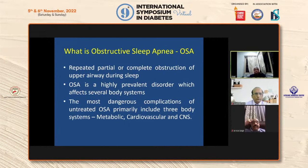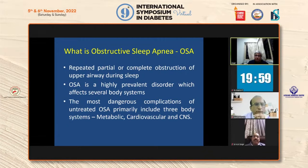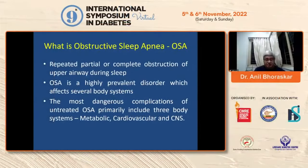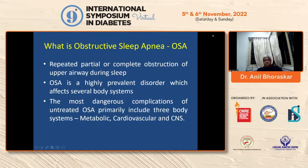What is obstructive sleep apnea? It is repeated partial or complete obstruction of the upper airway during sleep. OSA is a highly prevalent disorder which affects several body systems. The most dangerous complications of untreated OSA primarily include three systems: metabolic, cardiovascular, and cerebrovascular.